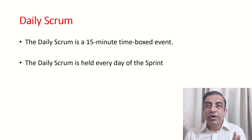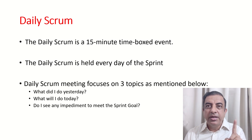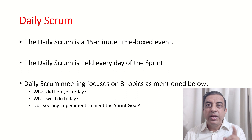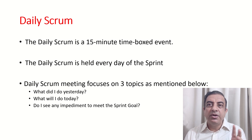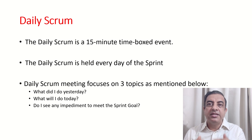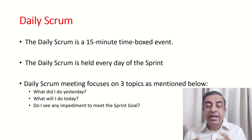The Daily Scrum meeting focuses mainly on three topics: Number 1 — what did I do yesterday? Number 2 — what will I do today? And Number 3 — what do I see as an impediment to meet the sprint goal? If any impediments are listed in this meeting, they are then solved later.